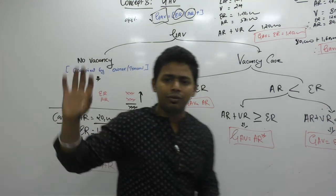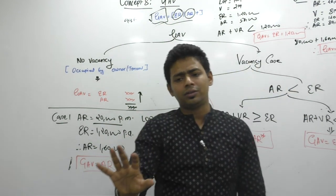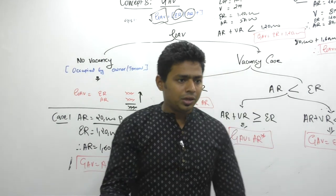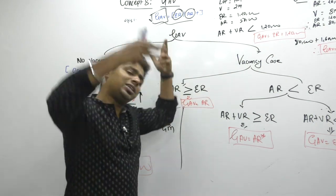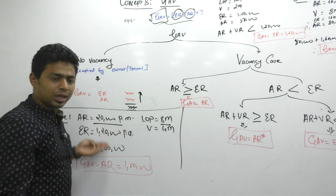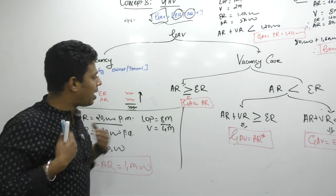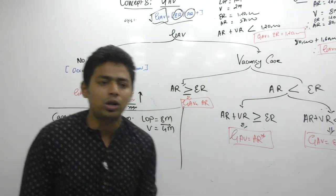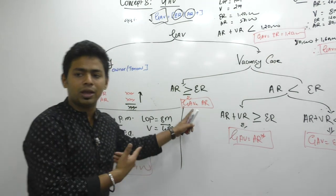When there is no vacancy, we take expected rent or actual rent whichever is higher — very simple. If there is vacancy but vacancy is not making your actual rent lower than expected rent — like Case 1 where 8 months earned 1,60,000 vs expectation of 1,20,000 — their actual rent is still higher than expected rent. Even if you don't know this law, you take whichever is higher, and that number is 1,60,000. That will be the right answer.